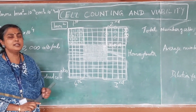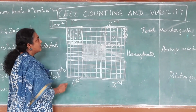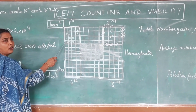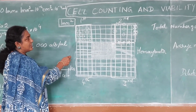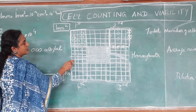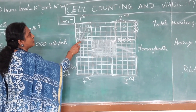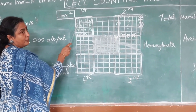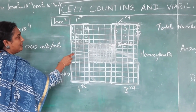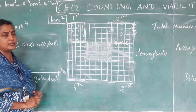When counting animal cells, we count the cells in the four corners. Each corner is made up of sixteen smaller squares, numbered one to sixteen. When counting, you go in a zigzag manner: start from the first, go to the fourth, come back to the fifth, go to the eighth, then the ninth, twelfth, and from thirteen to sixteen.